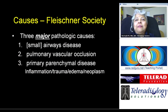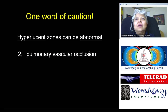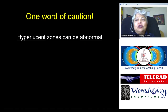Remember, when we say primary parenchymal disease, we include the whole spectrum of diseases from inflammation to neoplasm — it's as nonspecific as fat stranding. One word of caution though: it's different from fat stranding. In the lung, hyperlucent zones can be abnormal. So it's not always the denser areas that are abnormal; the lucent areas may be abnormal.